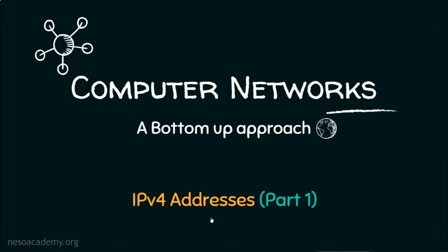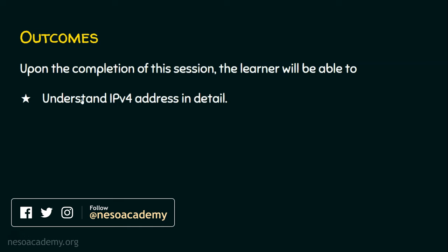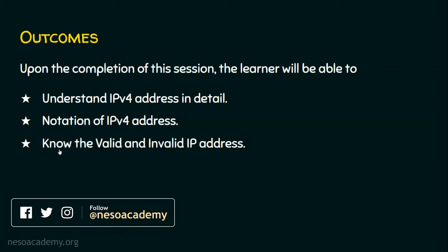In today's lecture, let's see Part 1 of IPv4 addresses. We will start the session with the outcomes. In today's session, we have three outcomes. Upon completion of the session, the learner will be able to: Outcome 1, understand the IPv4 address in detail. Outcome 2, see the notations of IPv4 address. And the last outcome, know the valid and invalid IP addresses with the help of an activity.